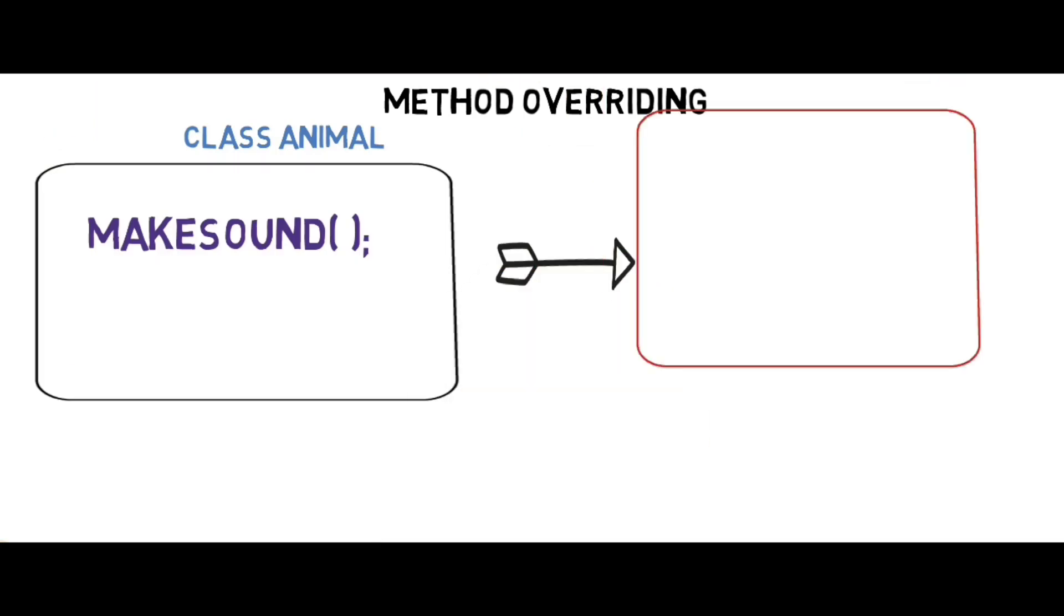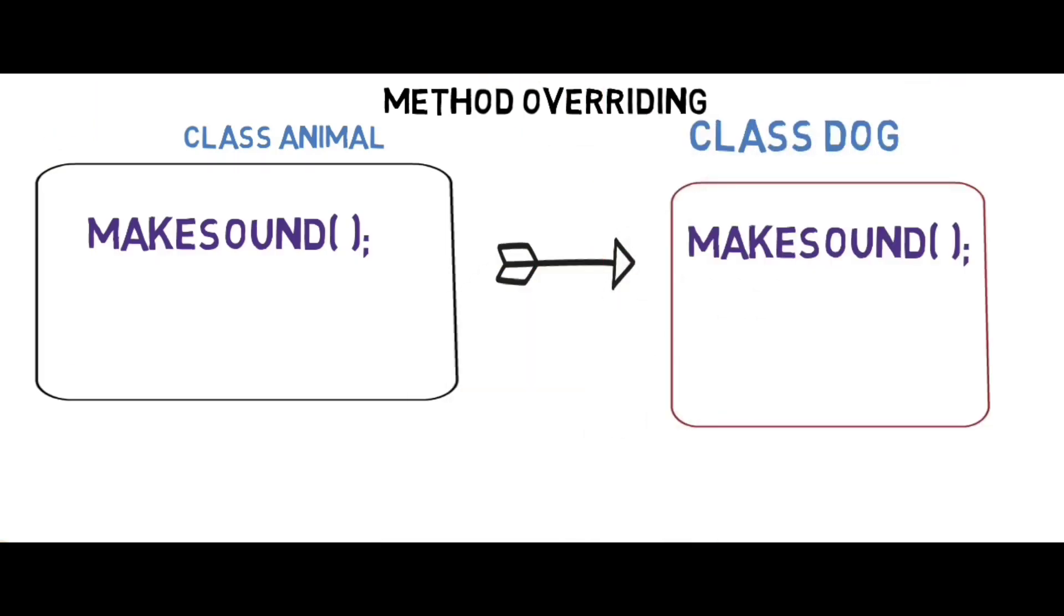If the method of superclass is inherited by the subclass, it is known as method overriding. As you can see, class dog is inheriting the makeSound method from animal class.